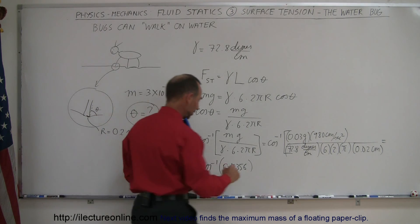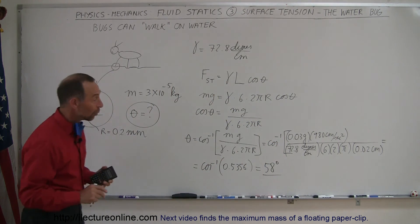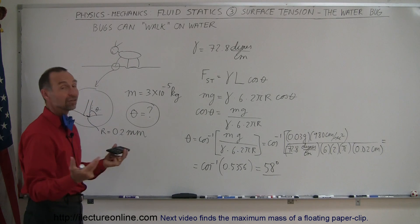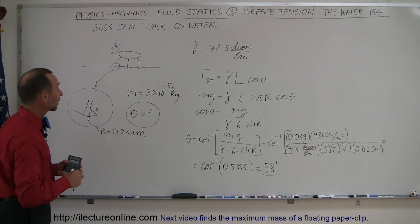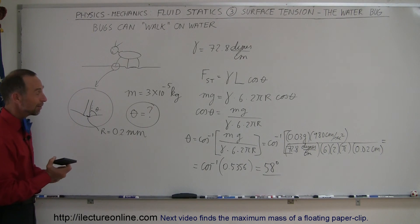It's 57.6 so let's call it 58 degrees. So yes indeed that bug can walk on water and the contact angle only needs to be 58 degrees. That means the bug can have a good lunge, get a little heavier and still walk on water. And that's how you do a problem like that.